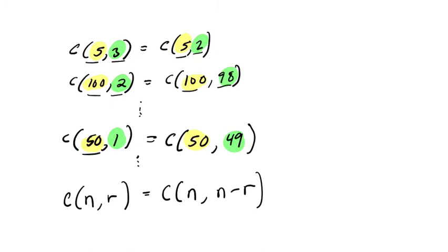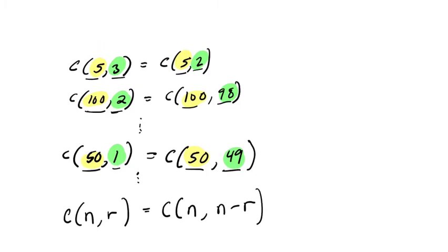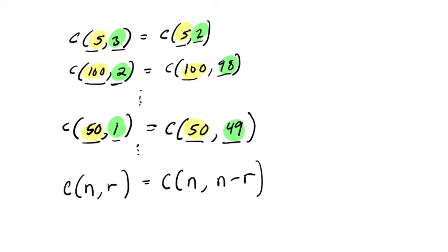Here you have 50 objects, you're choosing one of them. It's the same as having 50 objects and choosing 50 minus 1 of them. Or here, having 100 objects and choosing 2 of them is the same as having 100 objects and choosing 100 minus 2 of them.